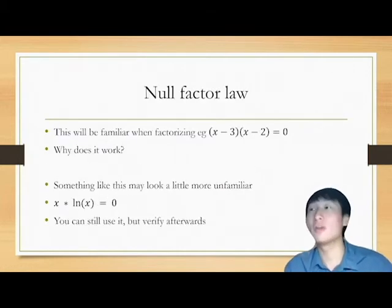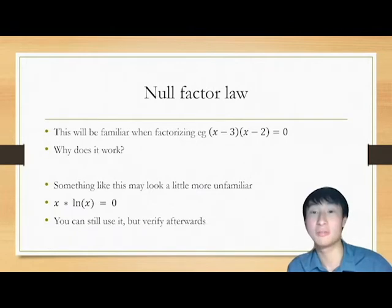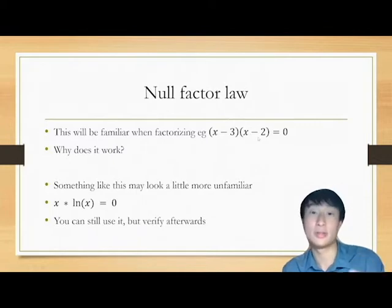Next up, we have the null factor law. This will be familiar when factorizing. Look at this, x equals 3, x equals 2. Why does it work? Because if the first bracket is 0, then the equation is valid. 0 equals 0. If the second part of the brackets, x minus 2, is equal to 0, then 0 equals 0.